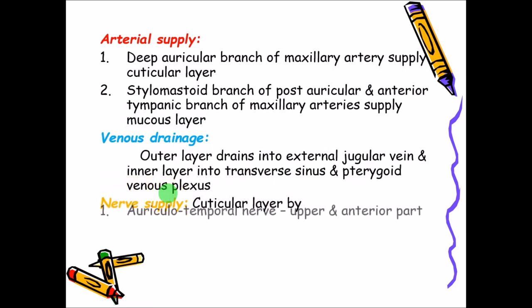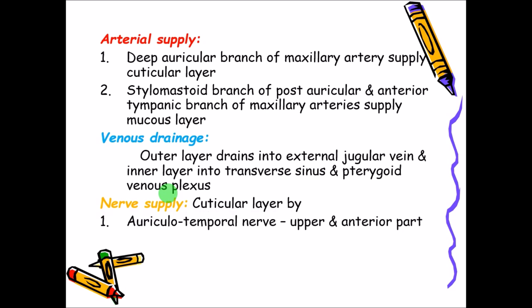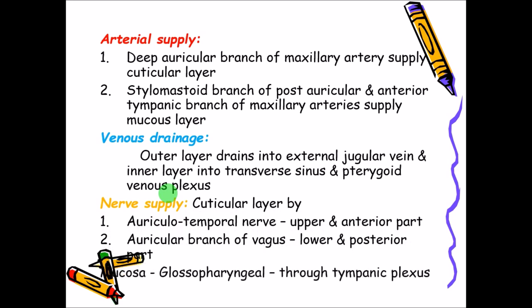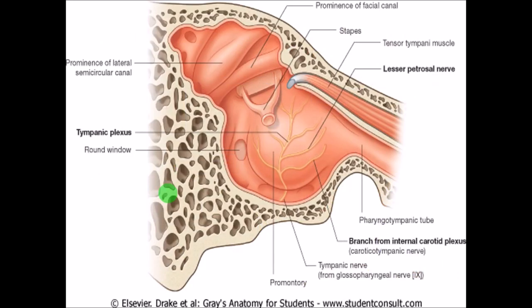For nerve supply, the cuticular outer layer is supplied by the auriculotemporal nerve for the upper and anterior part, and the auricular branch of the vagus nerve for the lower and posterior part. The mucous part is supplied by the glossopharyngeal nerve through the tympanic plexus. The tympanic nerve comes from the glossopharyngeal nerve and forms a plexus supplying the mucous layer.